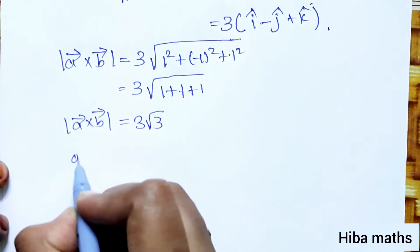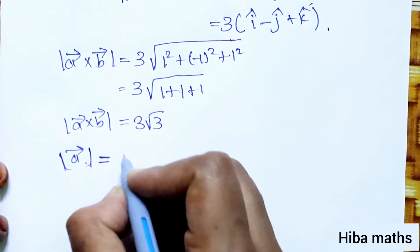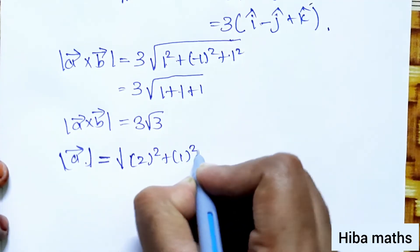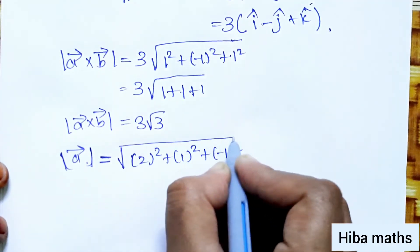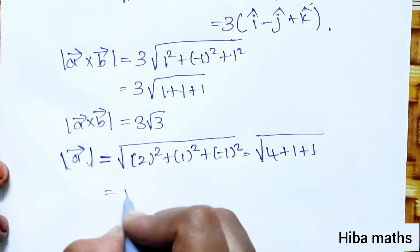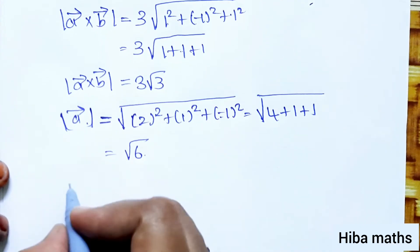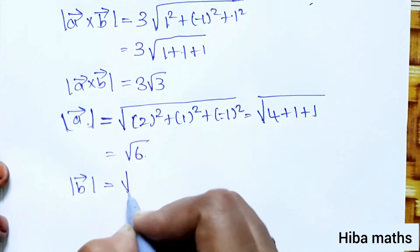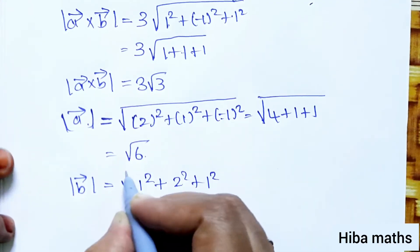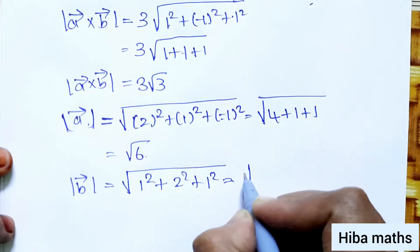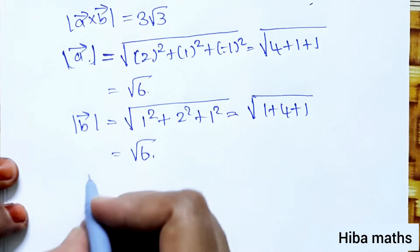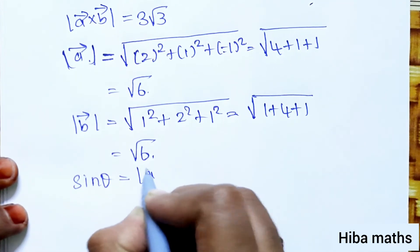Now we calculate modulus of a vector and modulus of b vector. For modulus of a: square root of 2 squared plus 1 squared plus minus 1 squared, that is 4 plus 1 plus 1, so root 6. For modulus of b: square root of 1 squared plus 2 squared plus 1 squared, that is root of 1 plus 4 plus 1, which is also root 6.